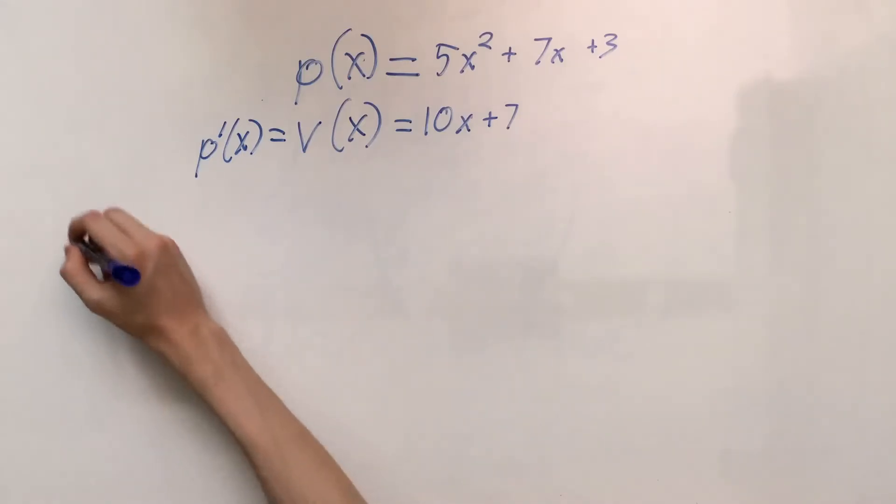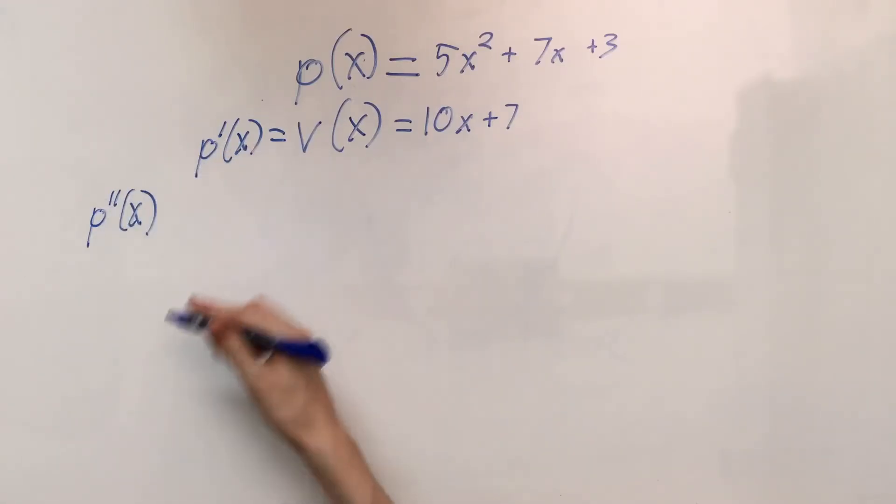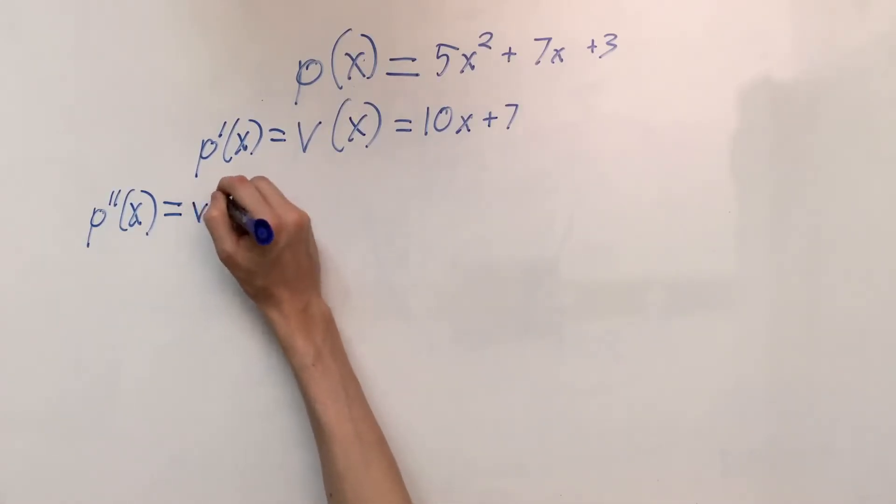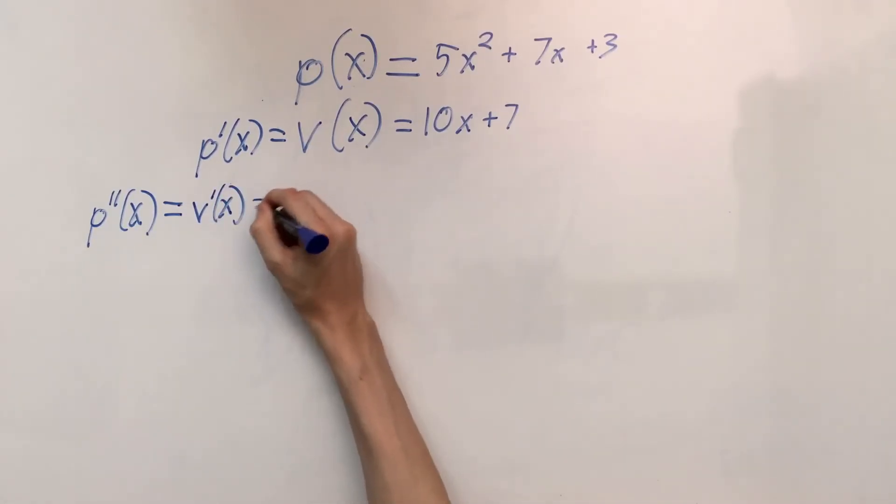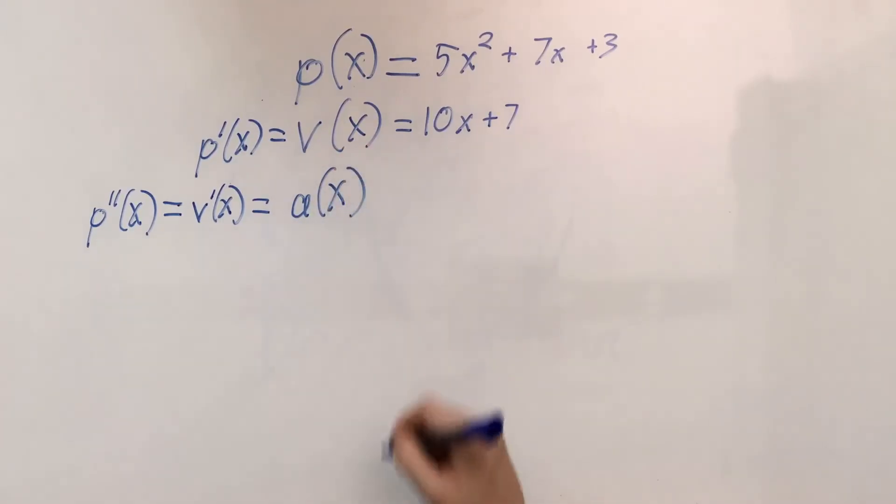Now, and I'm going to start writing out here, we know that for the position function, the second derivative in response to x, we know that that's equal to the derivative of the velocity function. So v tick mark of x, and then we know that that's equal to the acceleration function, which we're just going to write as a of x. So we know the change in velocity is acceleration, and that's why we're calling it acceleration there.